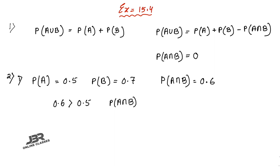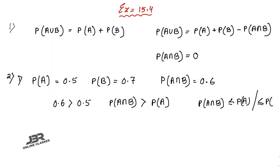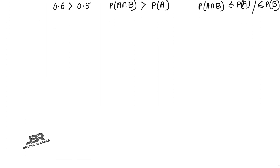Since P(A∩B) is greater than P(A), the probabilities P(A) and P(B) are not consistently defined. If P(A∩B) were less than P(A) or P(B), then they would be consistently defined. Here the first case is not consistently defined.